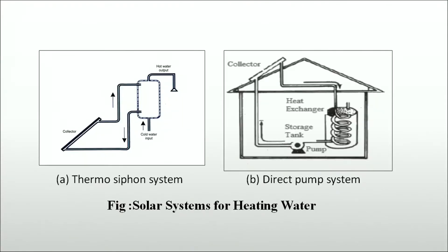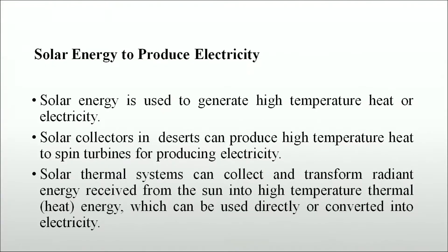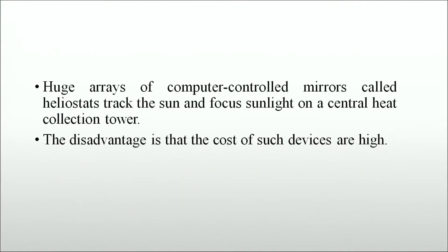Solar energy is used to generate high-temperature heat or electricity. Solar collectors in deserts can produce high-temperature heat to spin turbines for producing electricity. Solar thermal systems collect and transform radiant energy from the sun into high-temperature thermal energy, which can be used directly or converted into electricity. Huge arrays of computer-controlled mirrors called heliostats track the sun and focus sunlight on a central heat-collecting tower. The disadvantage is that the cost of such devices is high.